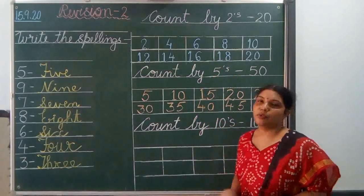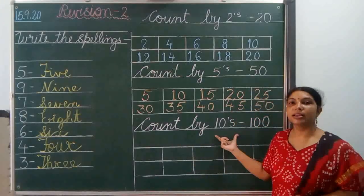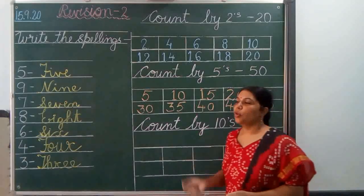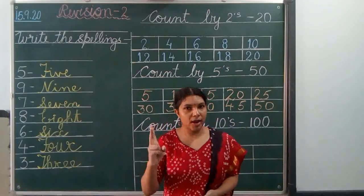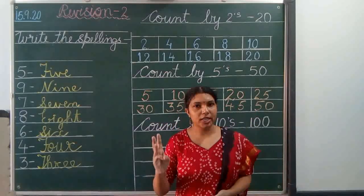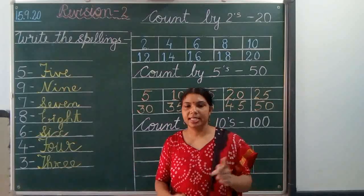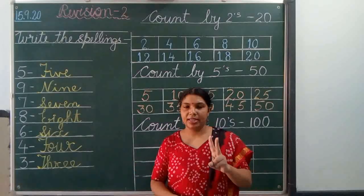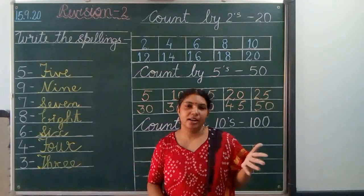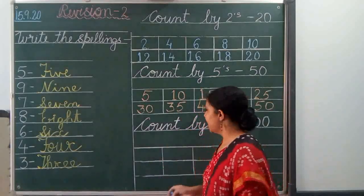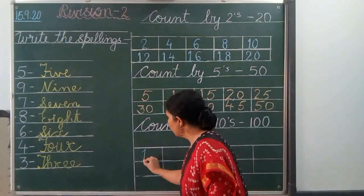Now count by 10's 100. For this: 10, 20, 30, 40, 50, 60, 70, 80, 90 and 100. Very easy. Let's write: 10,